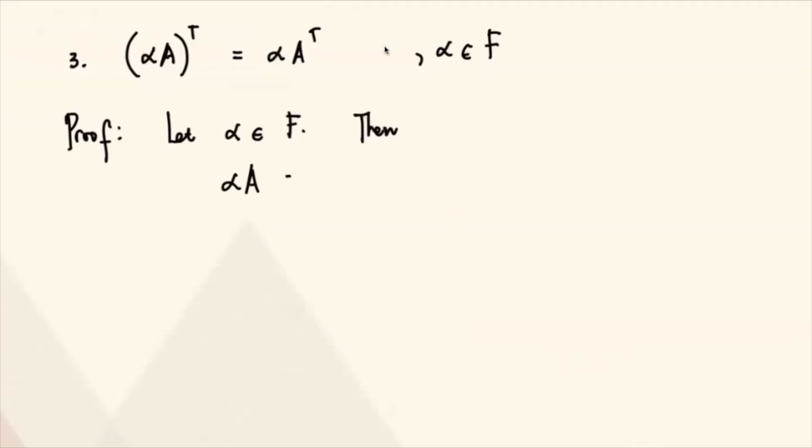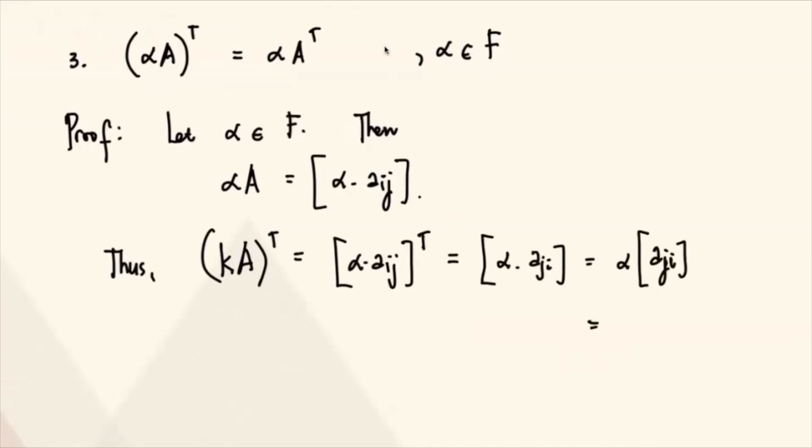Then, alam natin that when you multiply alpha, papasok lang naman yan, di ba? So if you take the transpose, you have alpha A transpose. So that means you're actually getting the transpose of this. But this is the same as alpha AJI. So if you extract the alpha, that is AJI, which is alpha A transpose. So therefore, totoo itong claim na ito.